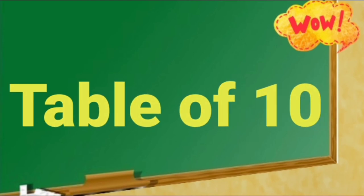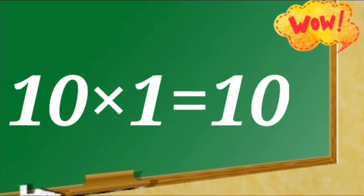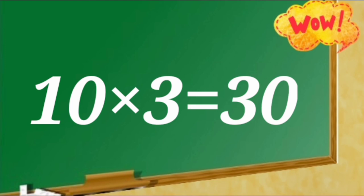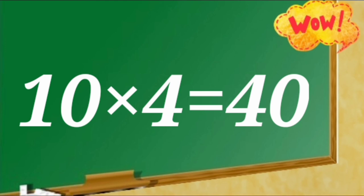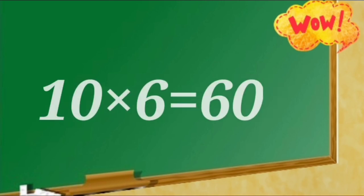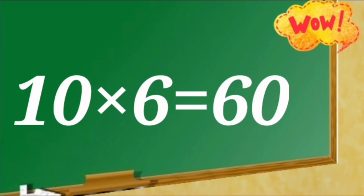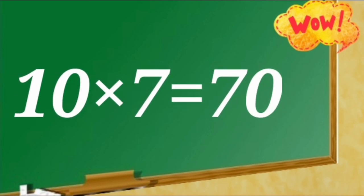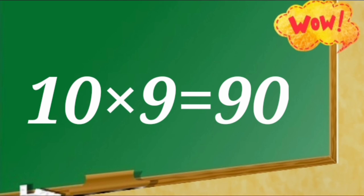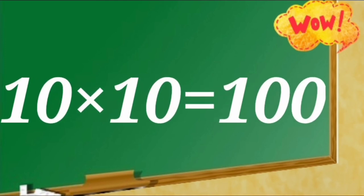Table of 10. 10 ones are 10, 10 twos are 20, 10 threes are 30, 10 fours are 40, 10 fives are 50, 10 sixes are 60, 10 sevens are 70, 10 eights are 80, 10 nines are 90, 10 tens are 100.